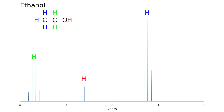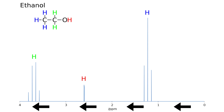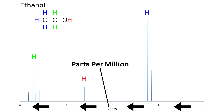The first thing to note about interpreting an NMR spectrum is that the x-axis is read from right to left, and the unit of the x-axis is parts per million.